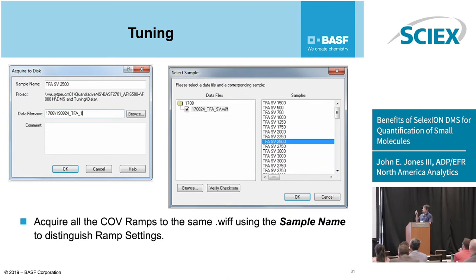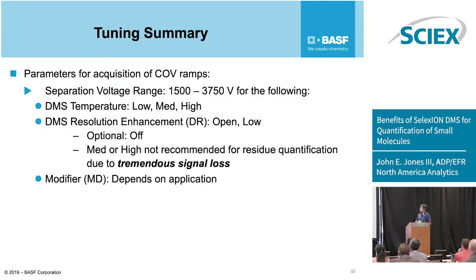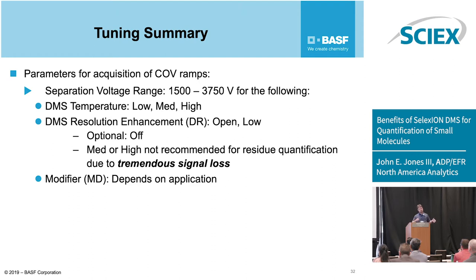Here's the WIF file — I've acquired everything into the same WIF so I can scroll through and look at all the separation and watch the molecule as it moves. The tuning summary: I generally use separation voltages from 1,500 to 3,750 V. I don't use 4,000 V because more often than not it'll arc out, which turns it off and stops the run. I test the molecule on DMS temperature low, medium, and high. For DMS resolution enhancement, I tune for open and low. Going from open to low you'll lose 30 to 70% of your signal. Medium and high are not recommended for residue quantification because you're talking about 90 to 99% signal loss — you have good separation but you can't see the molecule anymore.